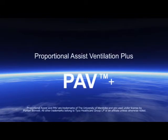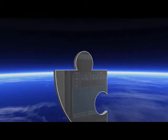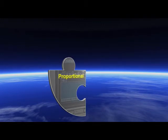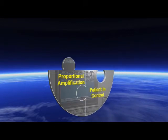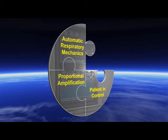Proportional Assist Ventilation Plus, or PAV Plus, is a form of synchronized ventilator support in which the ventilator generates pressure in proportion to instantaneous patient efforts. The ventilator simply amplifies inspiratory effort. Unlike other modes of partial support, there is no flow, pressure, or tidal volume set. PAV Plus's objective is to allow the patient to comfortably attain whatever breathing pattern his or her control system desires. The main goals of PAV Plus are synchrony and adaptability through the automated measurements of both demand and respiratory mechanics.